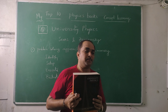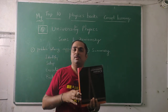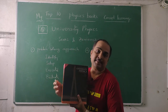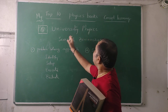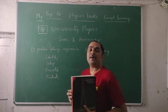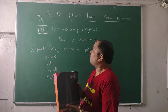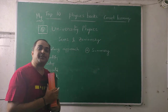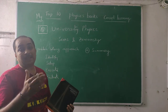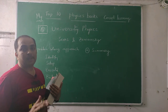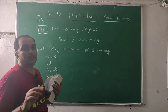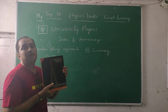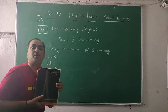My next book, number five, is University Physics by Sears and Zemansky, improvised by Hugh Young and Freedman. This is a very well-known book. Those who want to do self-study can start with this, and at the IIT level you can begin your learning course with it. The theory is good and the problems are very good.